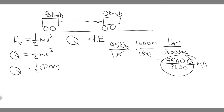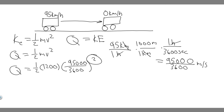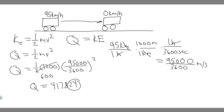Now that we have the velocity in the correct units we can just go ahead and plug it in. So we have 95,000 divided by 3600, and then we're going to square this value. Keep in mind the one half times 1200 just becomes 600. So we do 600 times (95,000 divided by 3600) squared. When you go ahead and do this you're going to find that Q is going to be equal to 417,824 joules.